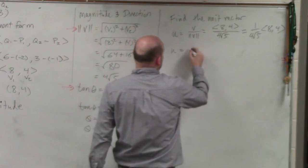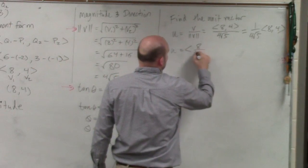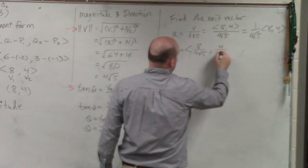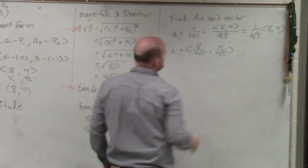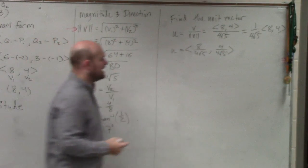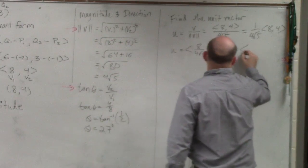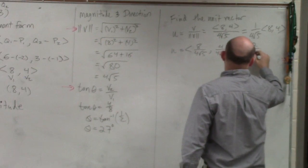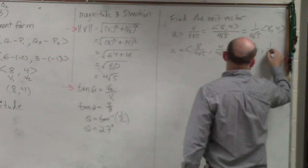I get 8 over 4 square root of 5, comma 4 over 4 square root of 5, which now I can simplify to 2 over the square root of 5, comma 1 over the square root of 5.